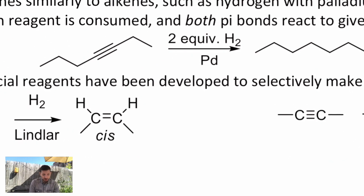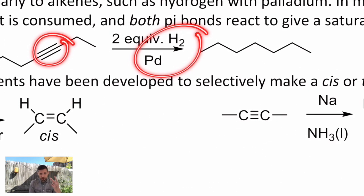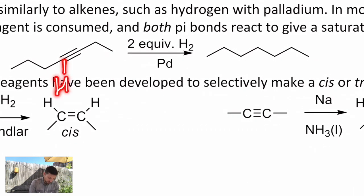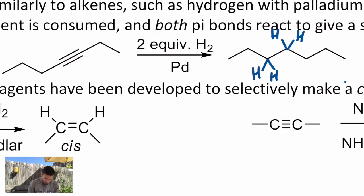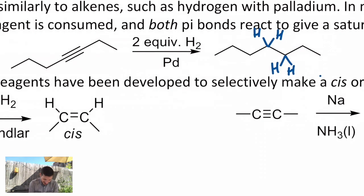For example, if I use H2 and palladium with an alkyne, you'll attach two equivalents of hydrogen. You'll get H on each carbon and then H on each carbon again. The two carbons that used to have no hydrogens on them now have two hydrogens each.